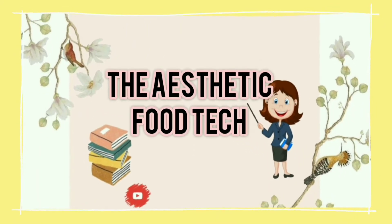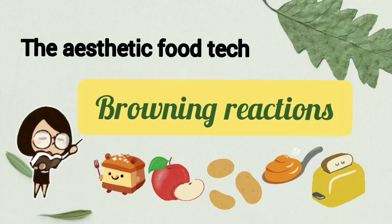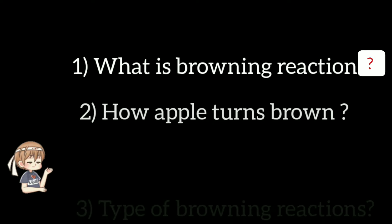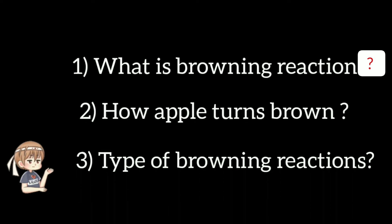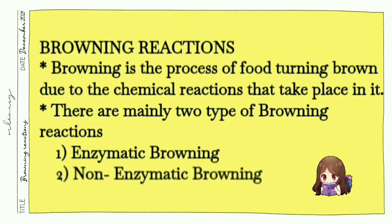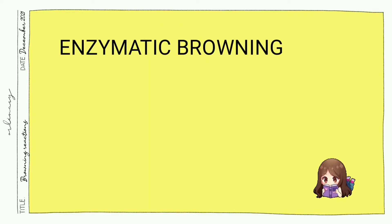Welcome to Aesthetic for Tech. In this video, I am going to discuss browning reactions — what is a browning reaction, how an apple turns brown, and types of browning reactions. Browning is the process of food turning brown, which occurs mainly due to chemical reactions that take place in food. There are mainly two types: enzymatic browning and non-enzymatic browning.